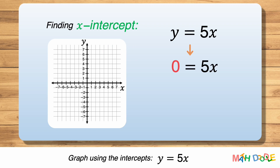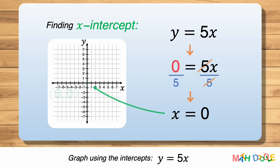0 equals 5x. After dividing both sides by 5, the equation becomes 0 equals x, or x equals 0. So, when y is 0, x is 0. This tells us that the line has the x-intercept of (0, 0), where the line crosses the x-axis.